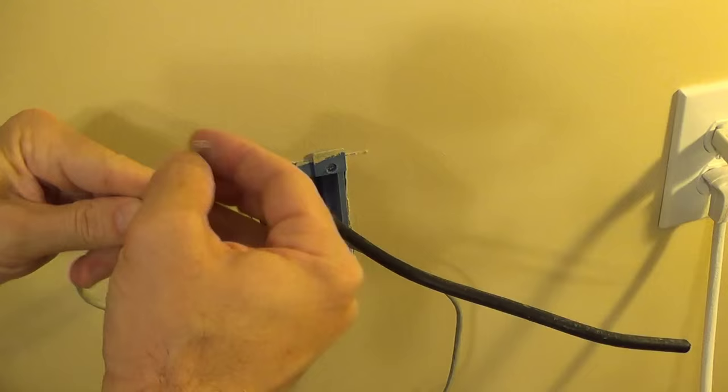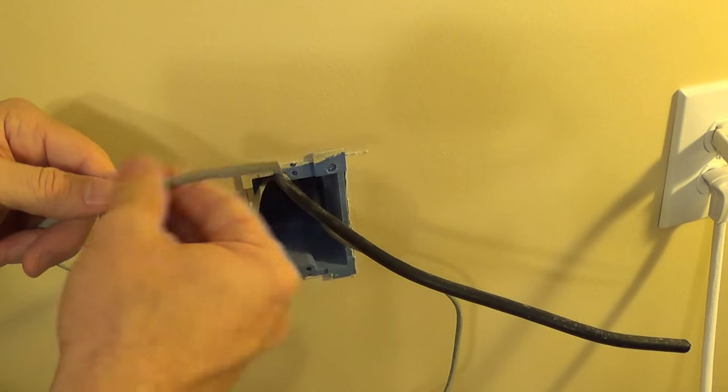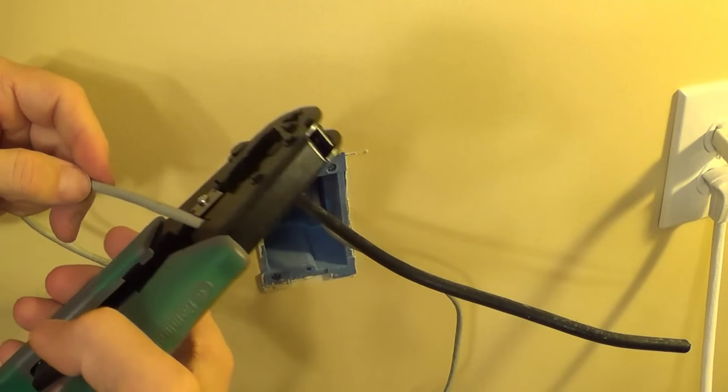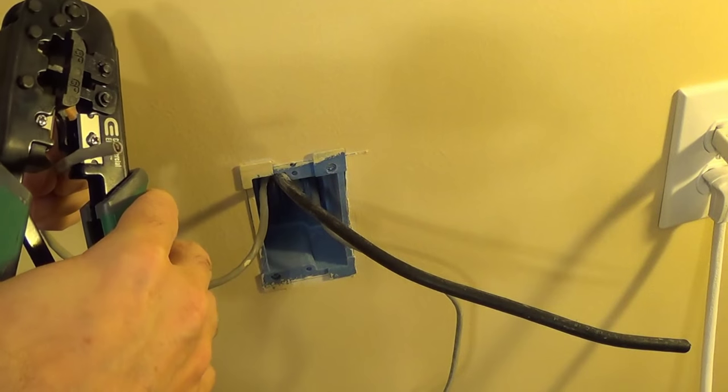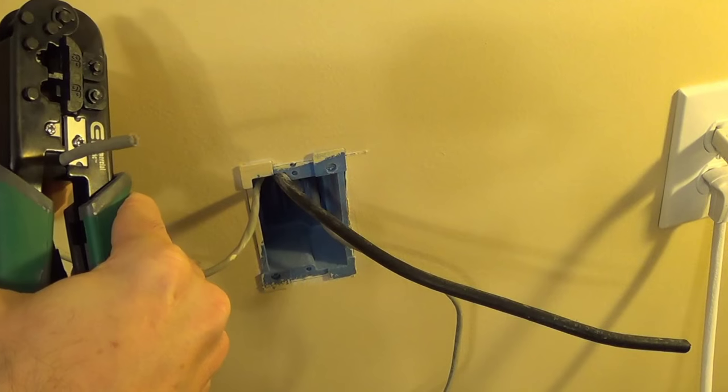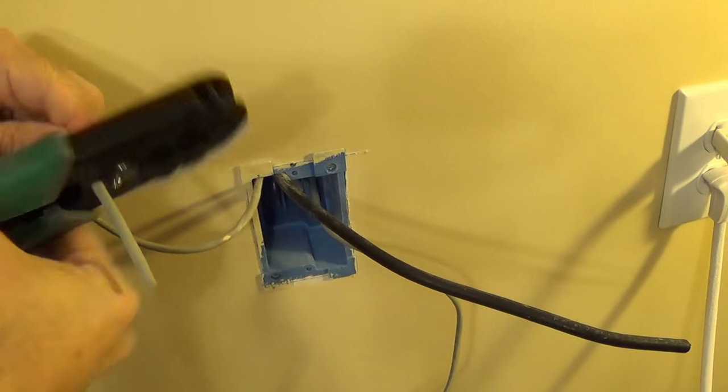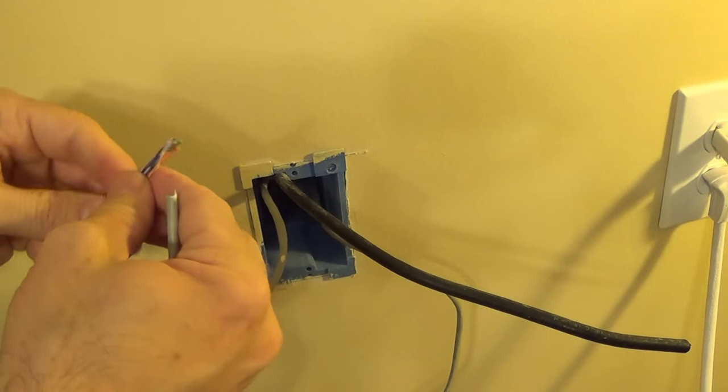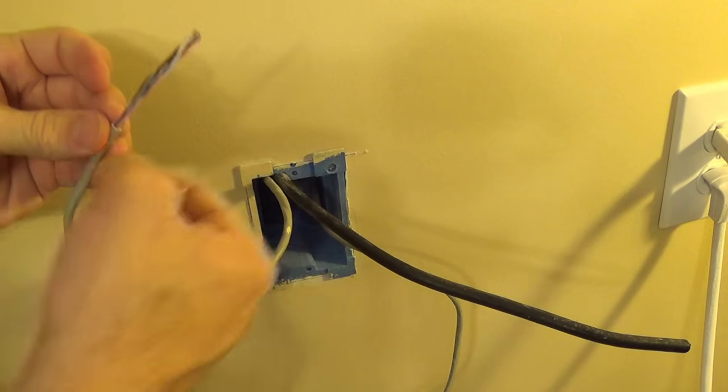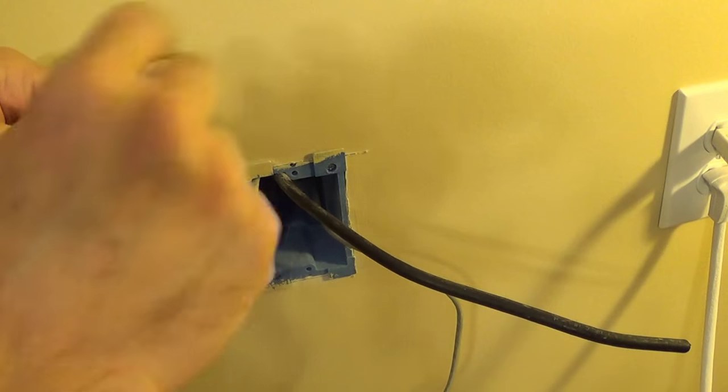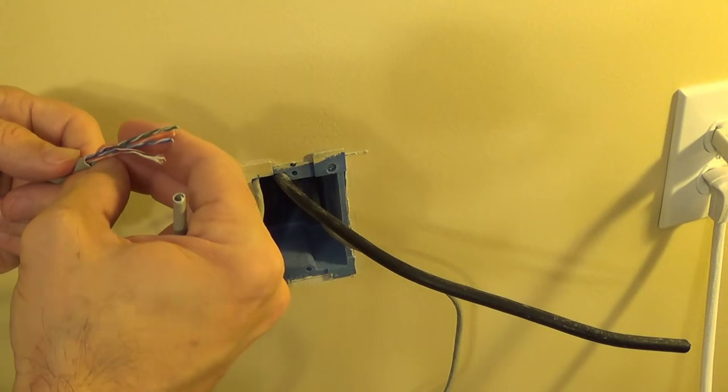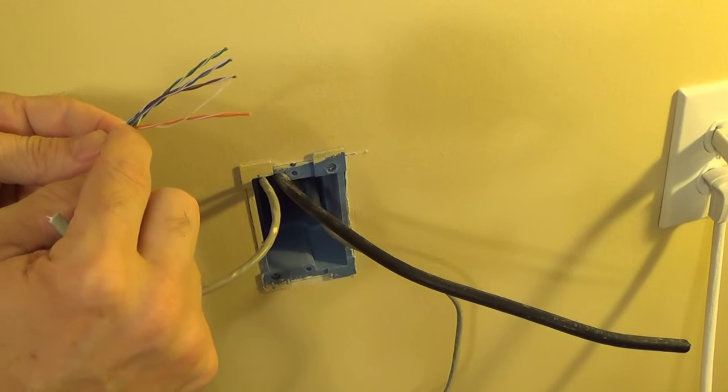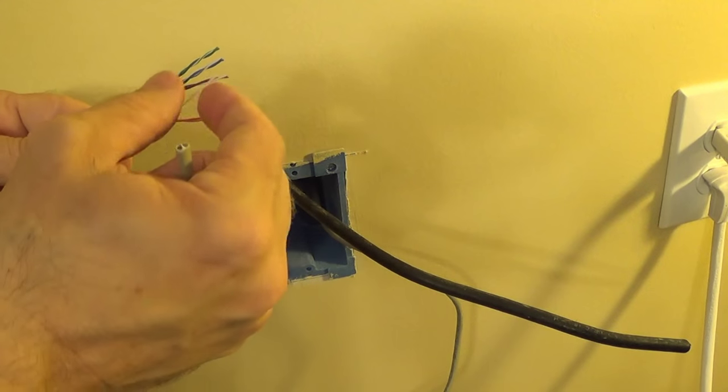Alright, so the first thing you want to do is just get this outer gray coating. It might be blue, it might be a different color, and I'm just using this crimping tool which has this built-in stripper. You may or may not have this, but it kind of helps. If you don't, just use either a little blade or a different tool, a wire stripper to get this outer coating out. But be careful that you don't cut these inner wires that you see here.